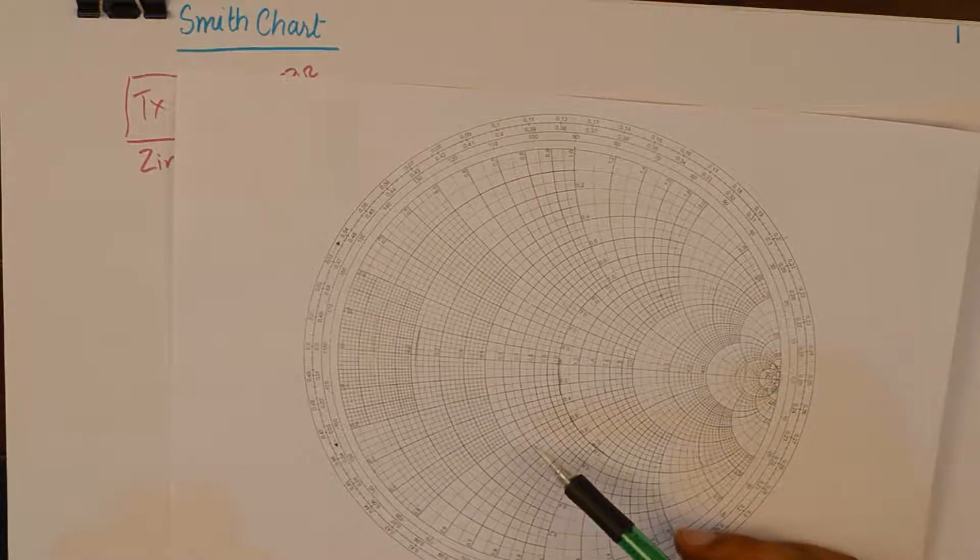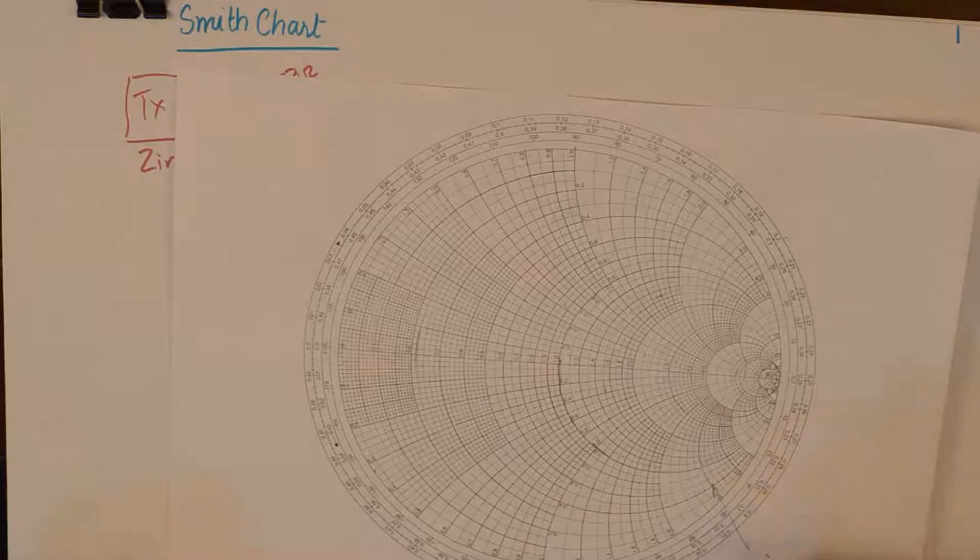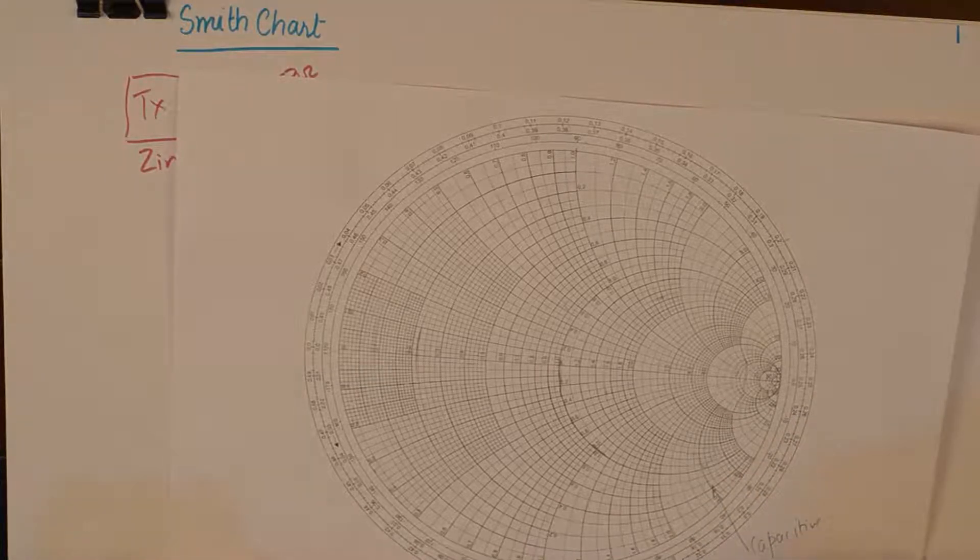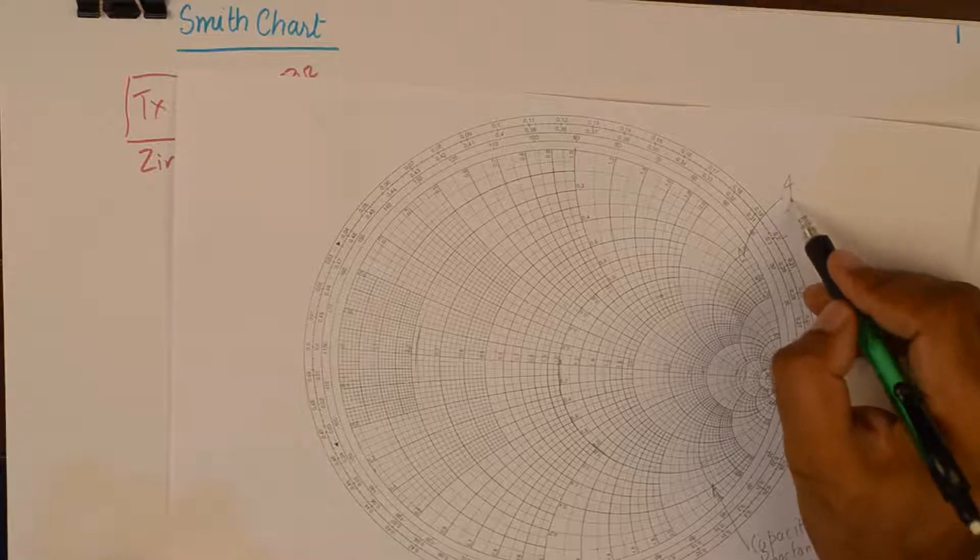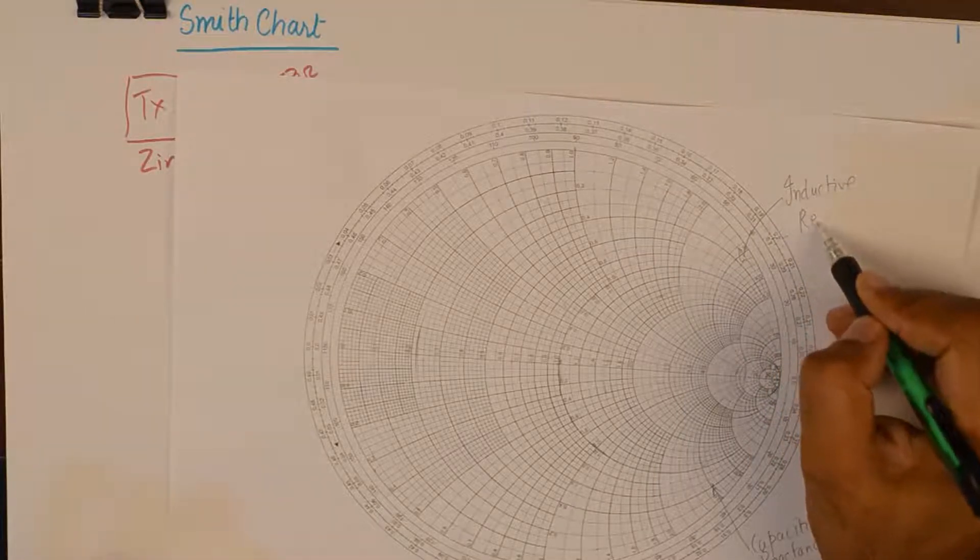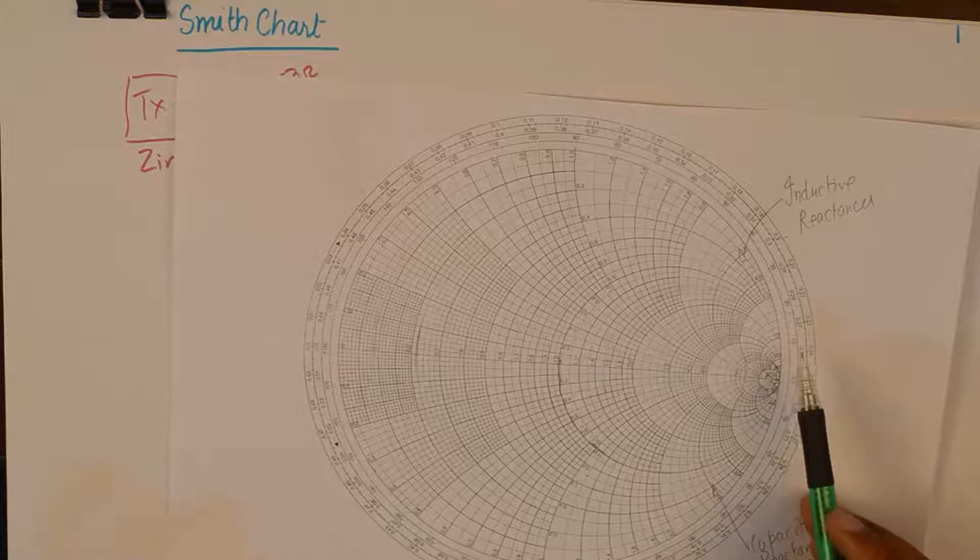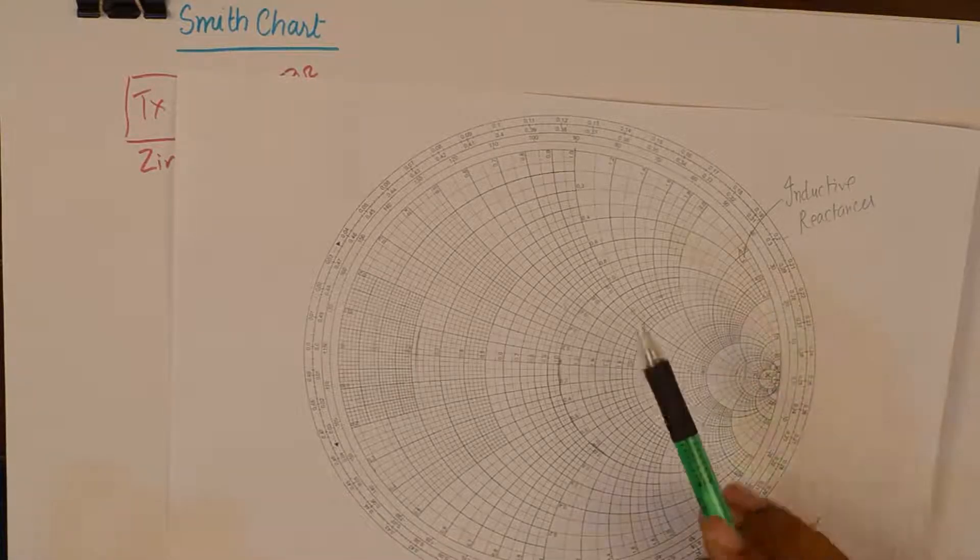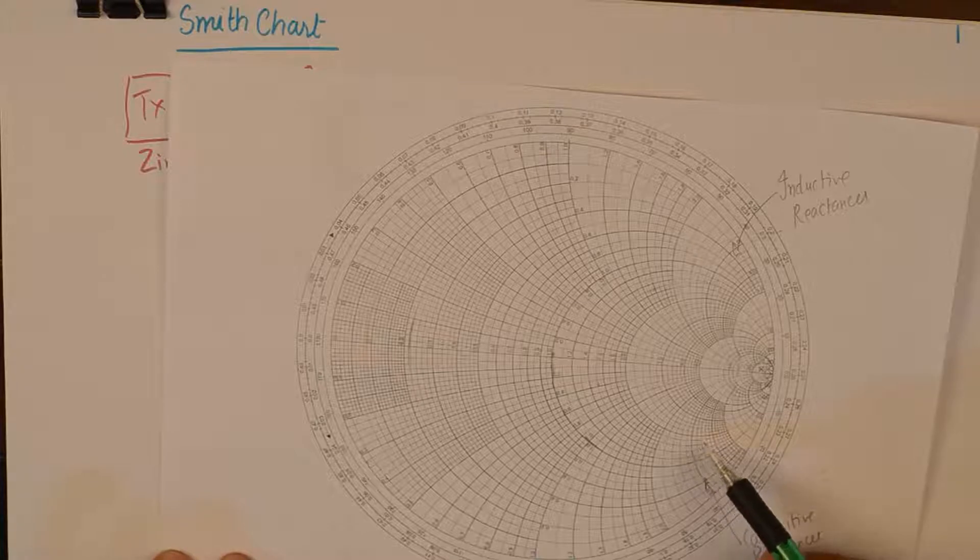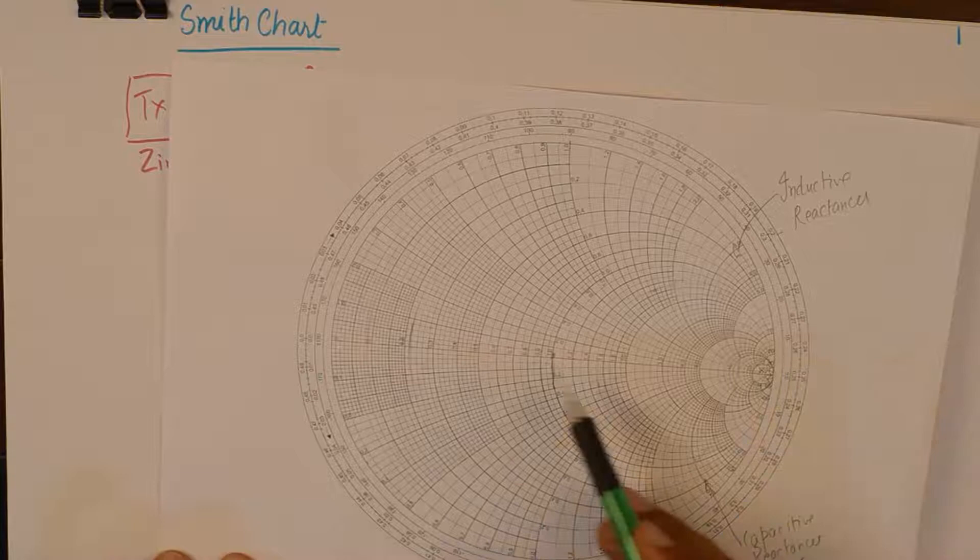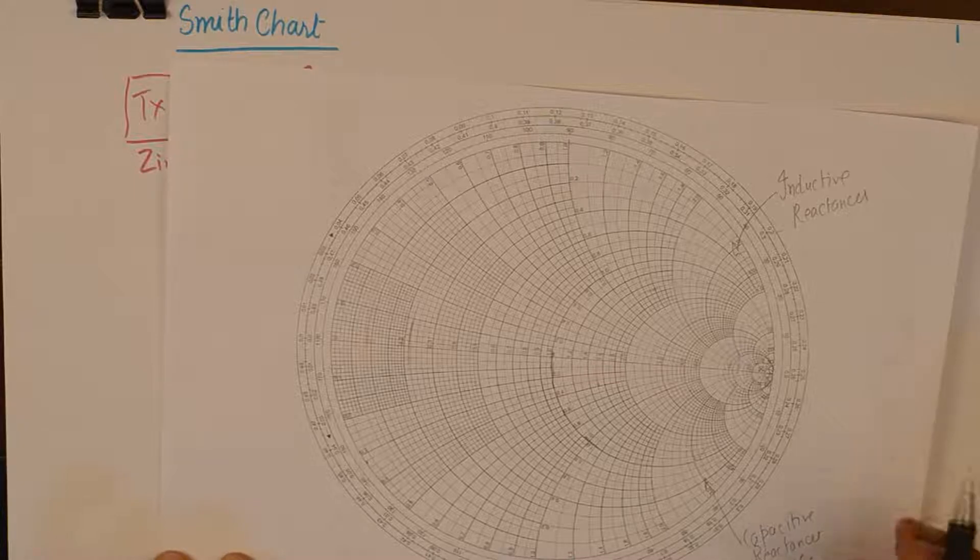So, on the Smith's chart, the lower half circles represent capacitive reactances, Xc, and the upper portion represents inductive reactances XL. Or in other words, if you have a plus iota term in the impedance that will be plotted on the upper side. If you have a negative iota term in the impedance that will be plotted in the lower side of the Smith's chart. And this straight line right in the center will be used to plot the resistance part of the impedance.